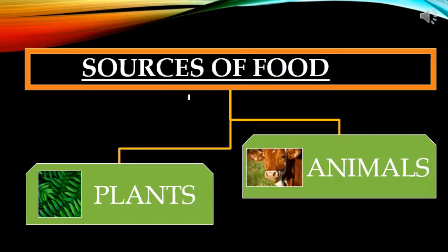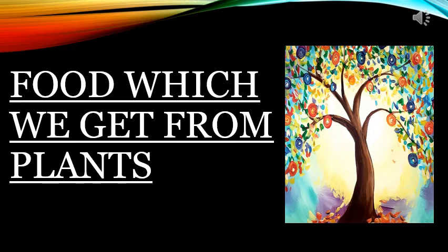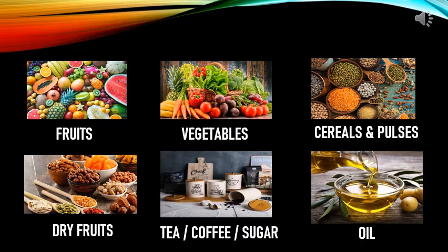Let's begin our session. Number 1 is sources of food. What are the sources of food? There are mainly two sources of food — plants and animals. All food we get comes from plants and animals. Now we will learn about food which we get from plants. We get fruits, vegetables, cereals and pulses, dry fruits, tea, coffee, sugar, and oil from plants.